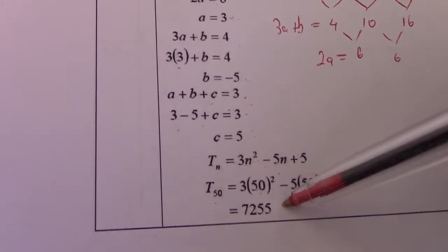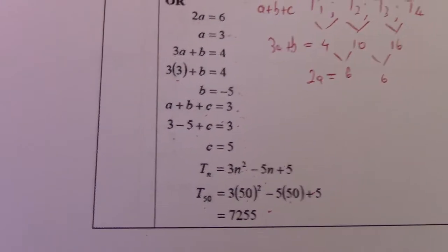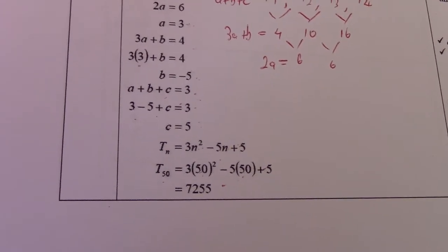So the n becomes 50 and wherever I see n I substitute 50, so that becomes 50 squared minus 5 times 50. On my calculator, I simplify and I get 7255.